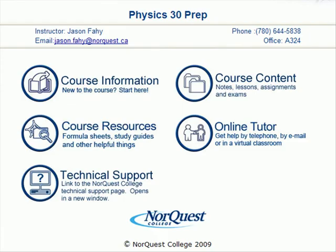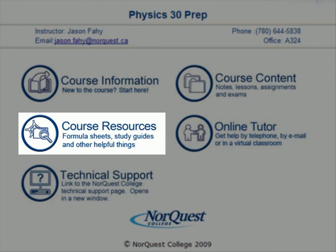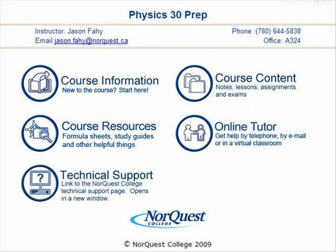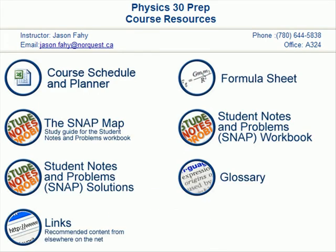The third link on the home page is the course resources link. On the course resources page there is a planning spreadsheet that can build a study schedule for you, a very complete formula sheet identical to the one used on the diploma exam, the SNAP map study guide keyed to the student notes and problems book, the notes and problems workbook itself which you can print off, solutions to all the questions in the student notes and problems book, a glossary for technical terms, and a list of external links to useful, informative, or cool stuff found elsewhere on the web.